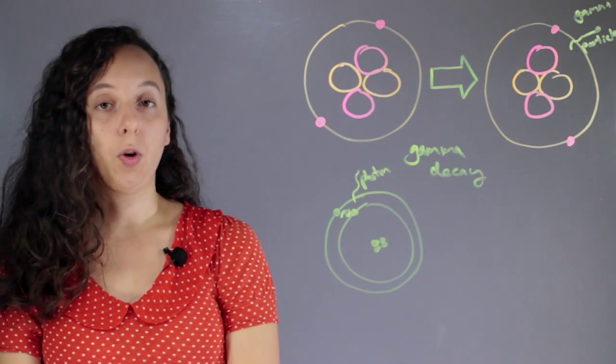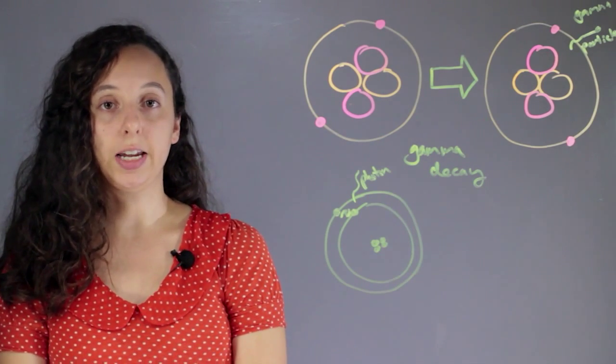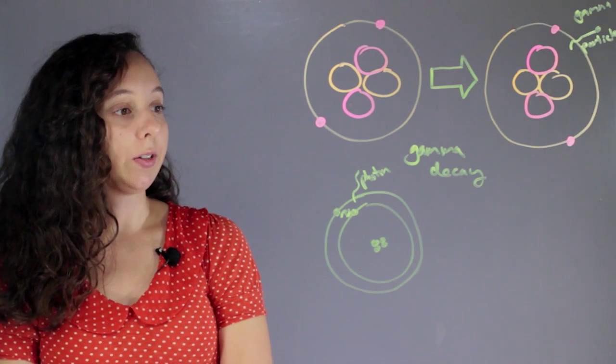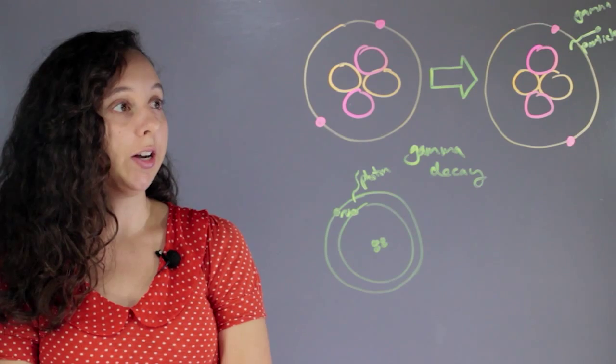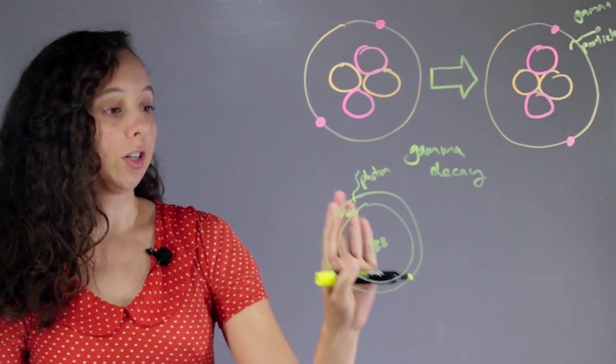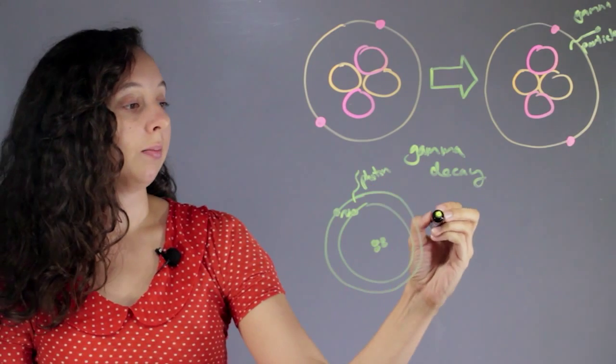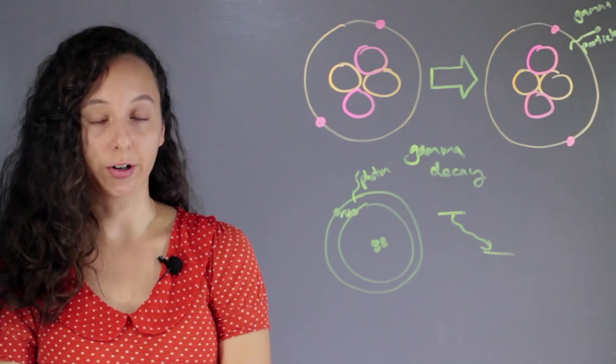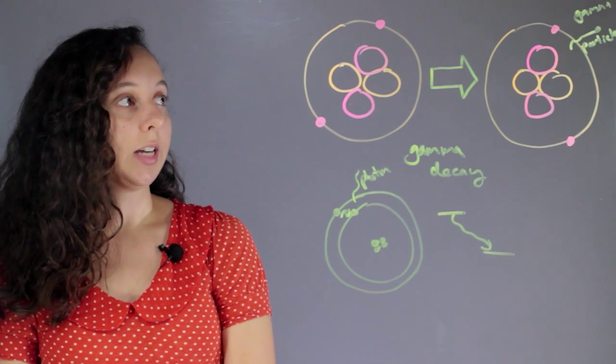So that's what happens when one electron goes from an excited state to a lower energy state and a gamma particle is basically the photon version of what happens in gamma decay. So basically instead of just an electron at a higher state you have the entire particle.